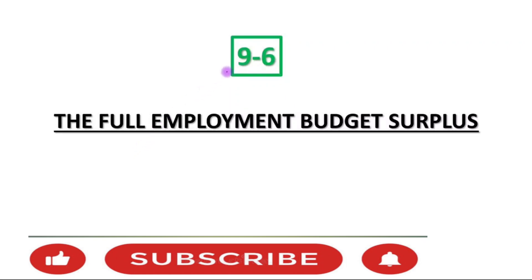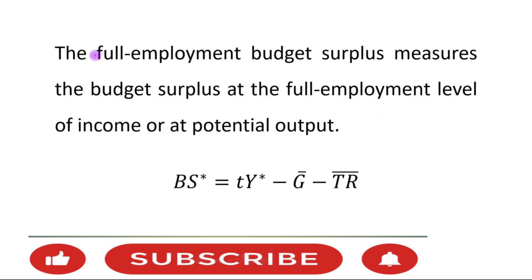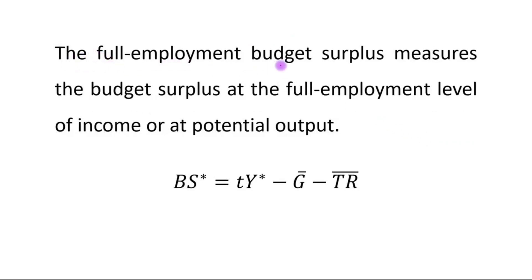Hello students, this is the last topic of chapter number nine, Income and Spending, section 9.6: the Full Employment Budget Surplus. The full employment budget surplus measures the budget surplus at the full employment level of income or at potential output.